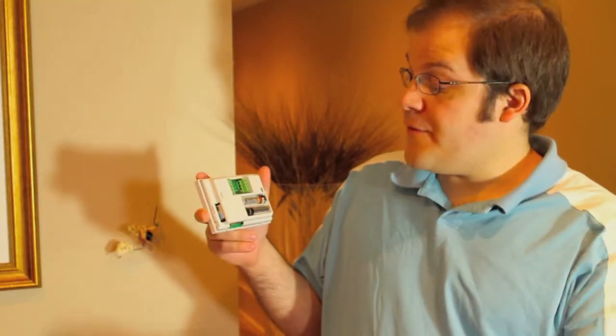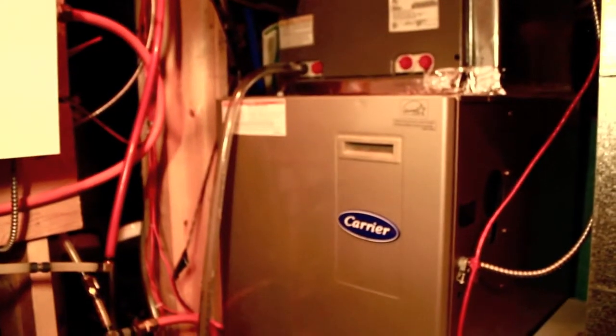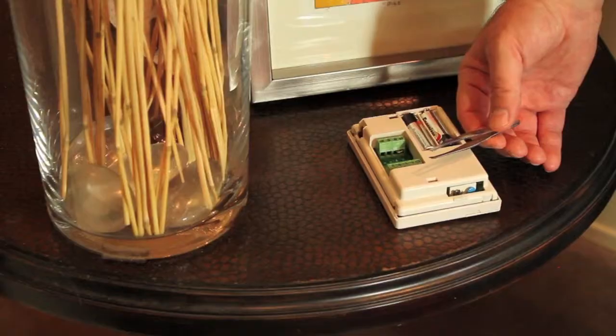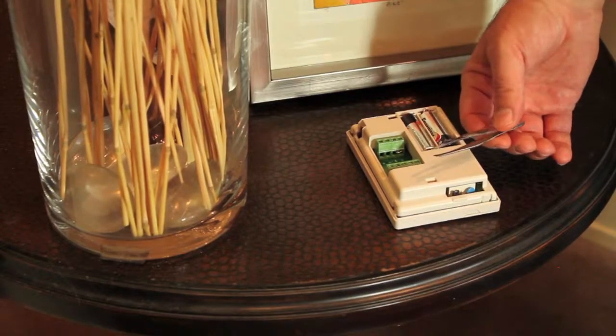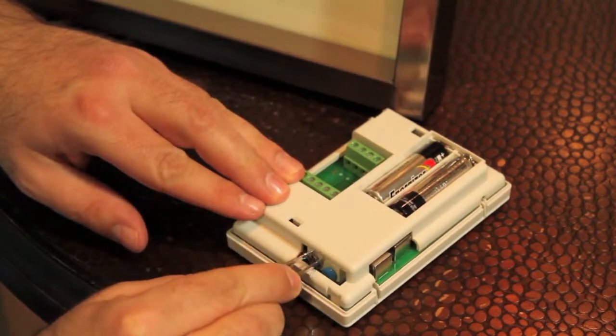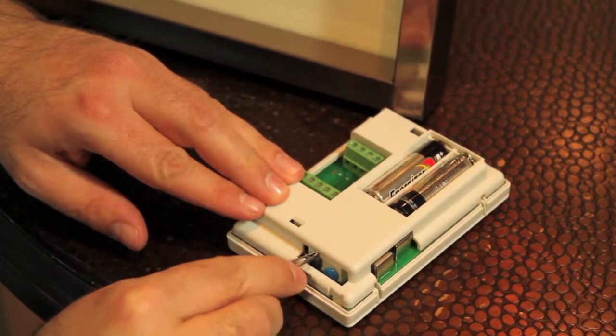Take a look at the fan operation jumper also on the back of the thermostat. If you're using a gas furnace the jumper should already be in the HG position. You may wish to use tweezers to grab hold of it. If you're using an electric furnace remove the jumper and place it in the HE position.